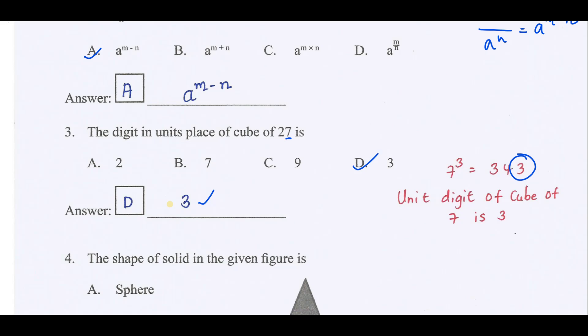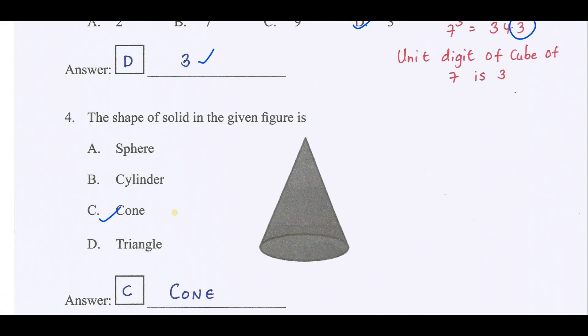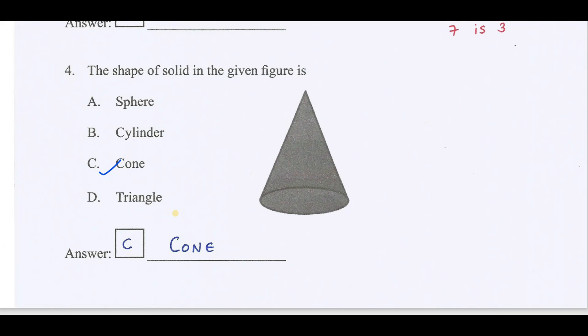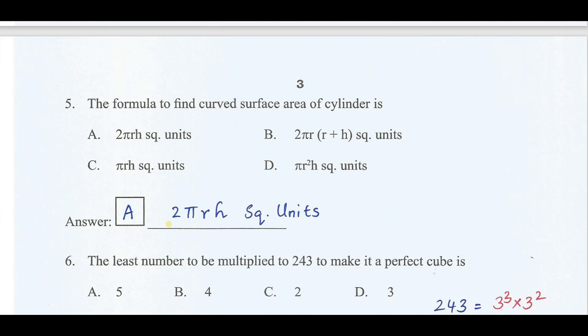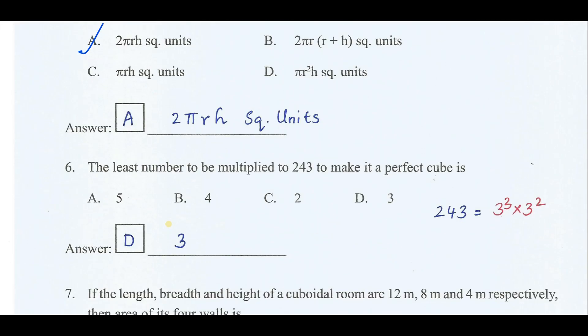The shape of the solid in the given figure is a cone. Therefore the correct answer is option C, cone. Here in the box provided you will write the alphabet of the correct answer and also you'll write the answer. The formula to find out the curved surface area of cylinder is 2πrh square units. The least number to be multiplied to 243 to make it perfect cube: by factorizing we get 243 equals 3 cube into 3 square. So I should multiply with 3. Therefore it becomes 3 cube into 3 cube, which becomes a perfect cube. The correct answer is option D.